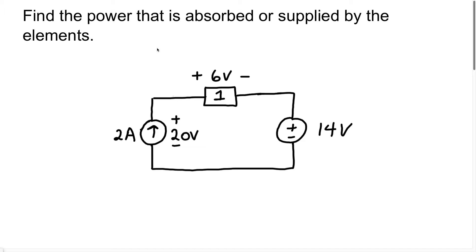In this video, we're going to learn how to solve for the power in different elements of a circuit. This is going to be part one, and we'll have a part two. We're not going to be using any resistors, capacitors, or inductors — we're merely going to use what we know about passive sign convention and different sources to calculate the power in each element. The question asks us to find the power that is absorbed or supplied by the elements.